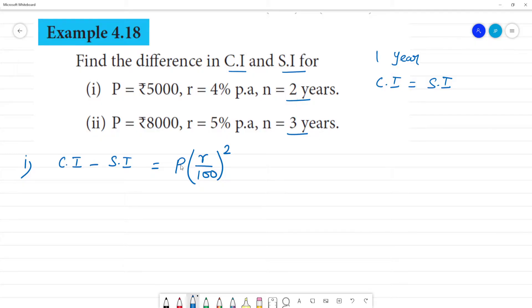For 2 years, P into r by 100 into 2. Now look at the principal amount 5000, r is 4, 4 by 100 the whole square. Now cancel, 1 4 is 4 2 4 is 8.